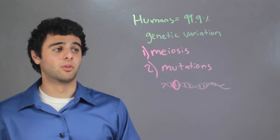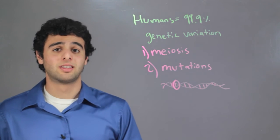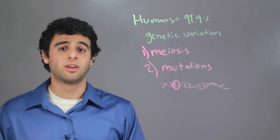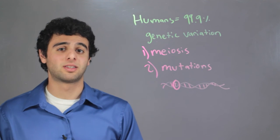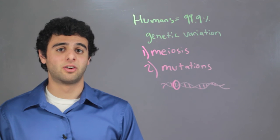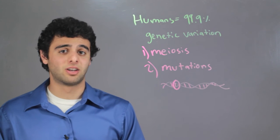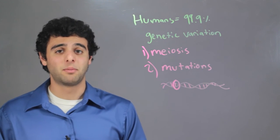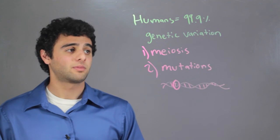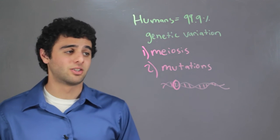So to overview, we have humans that each have about 99.9% similar DNA to each other. However, there is still some genetic variation. Examples of this genetic variation are meiosis and mutations.